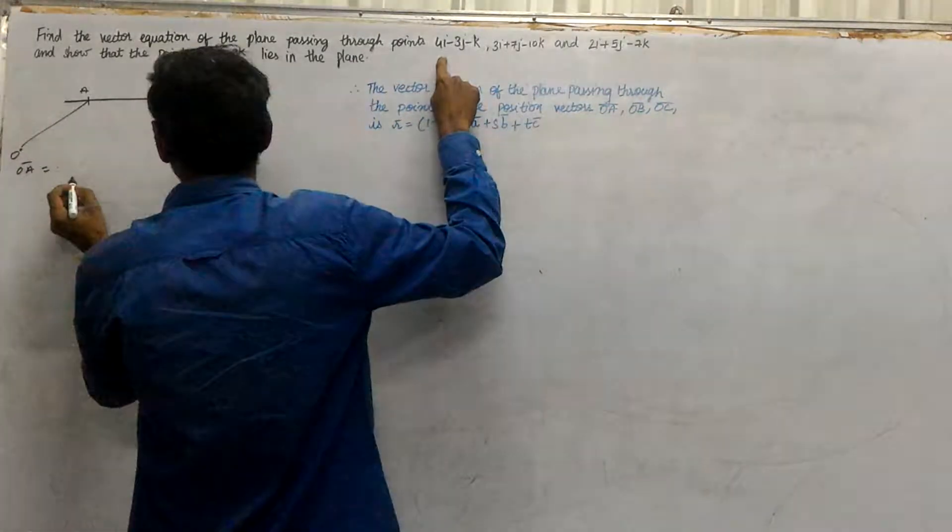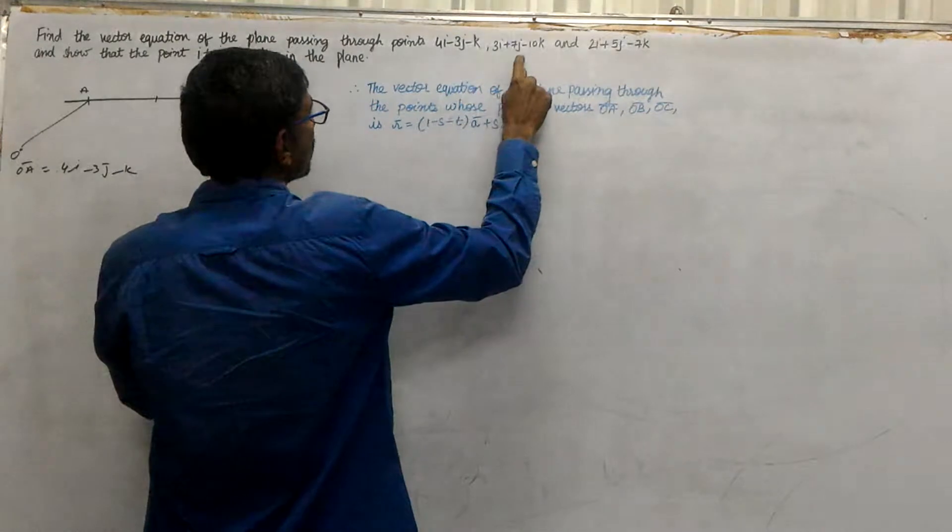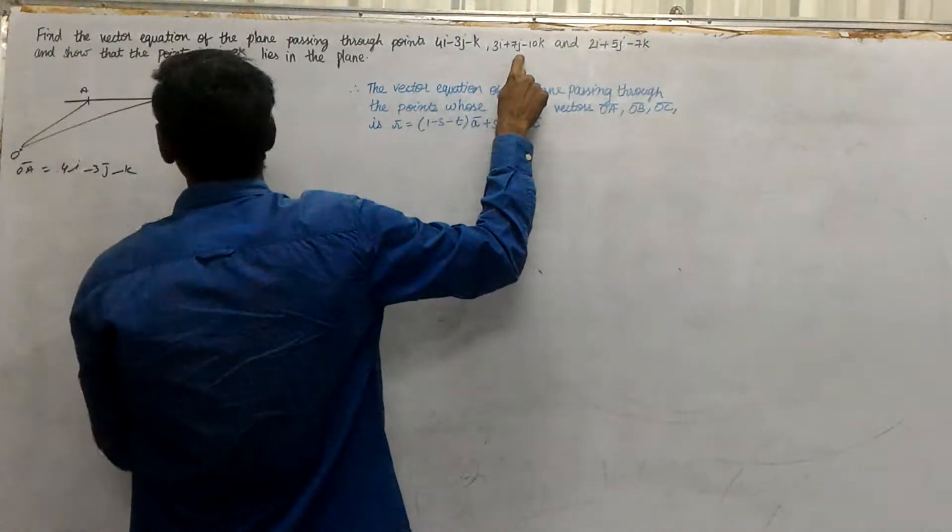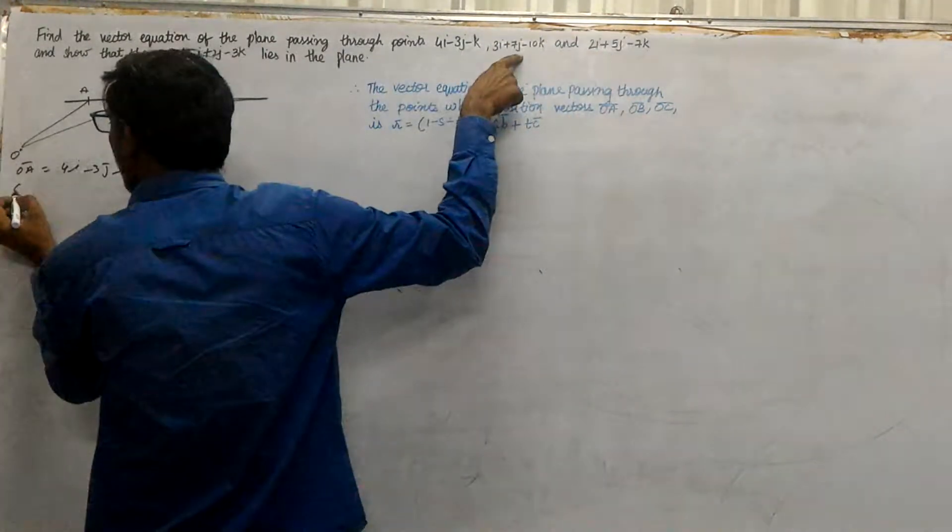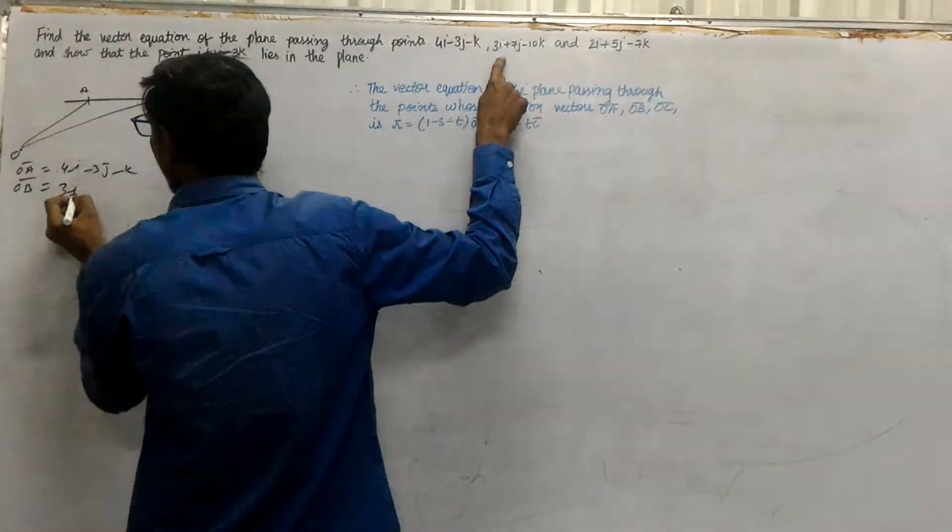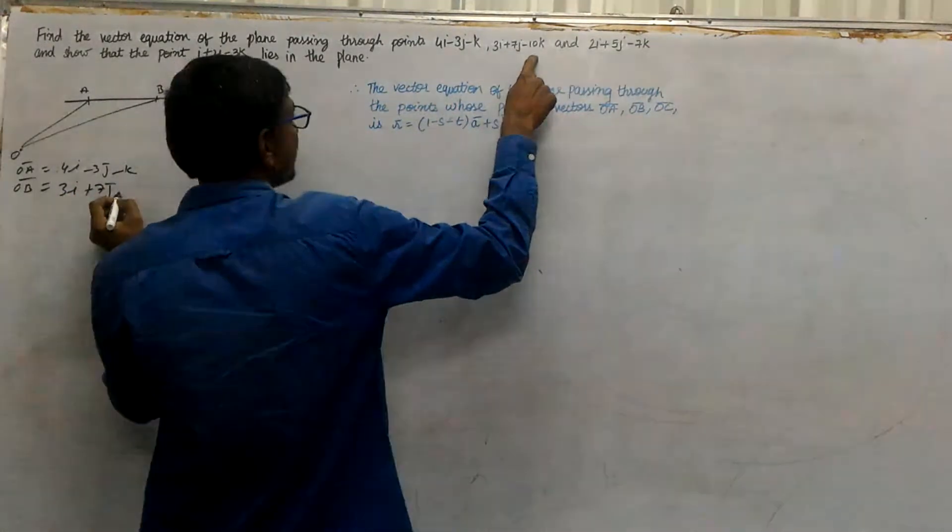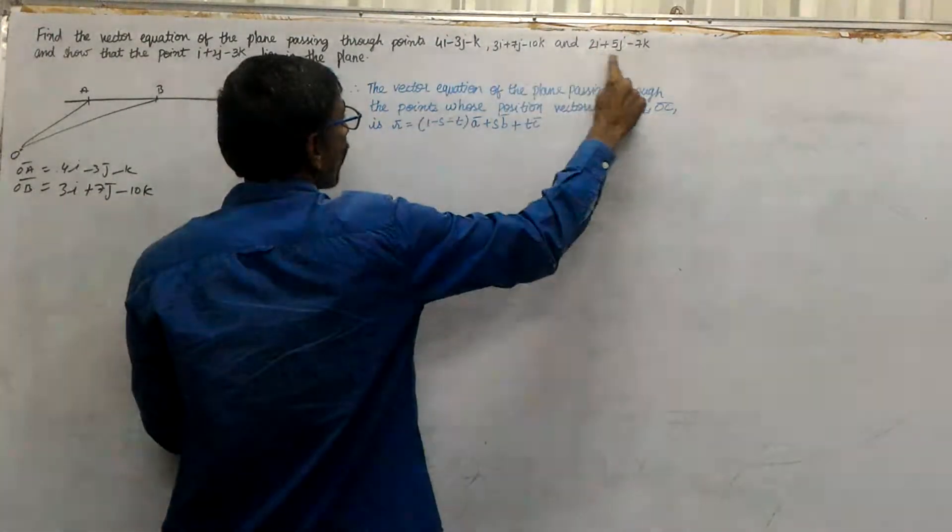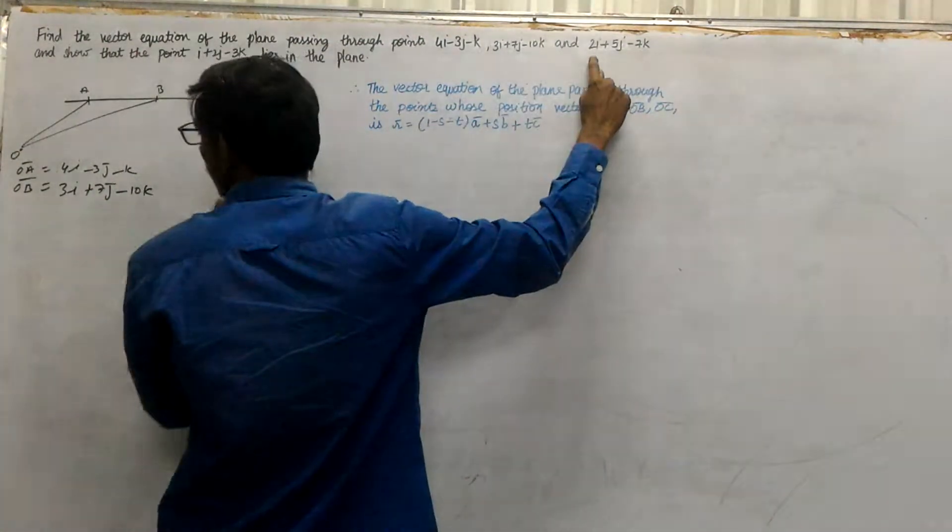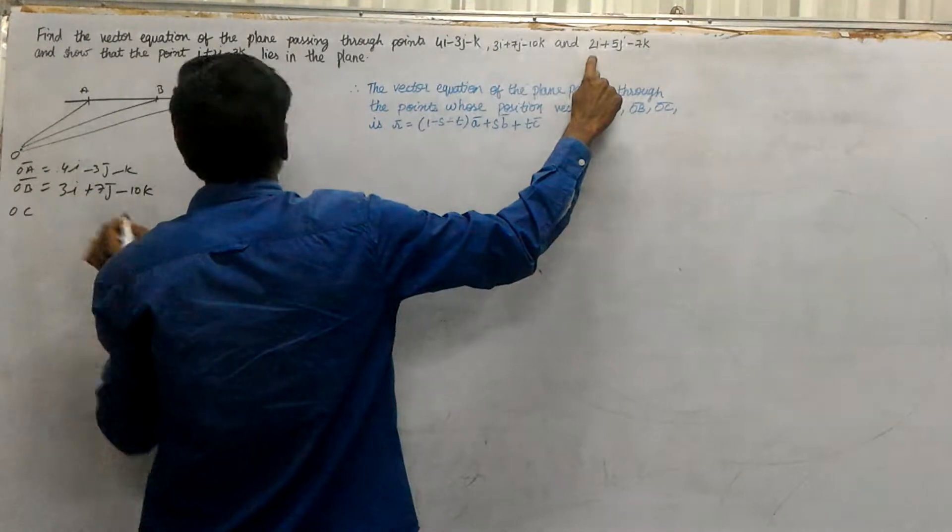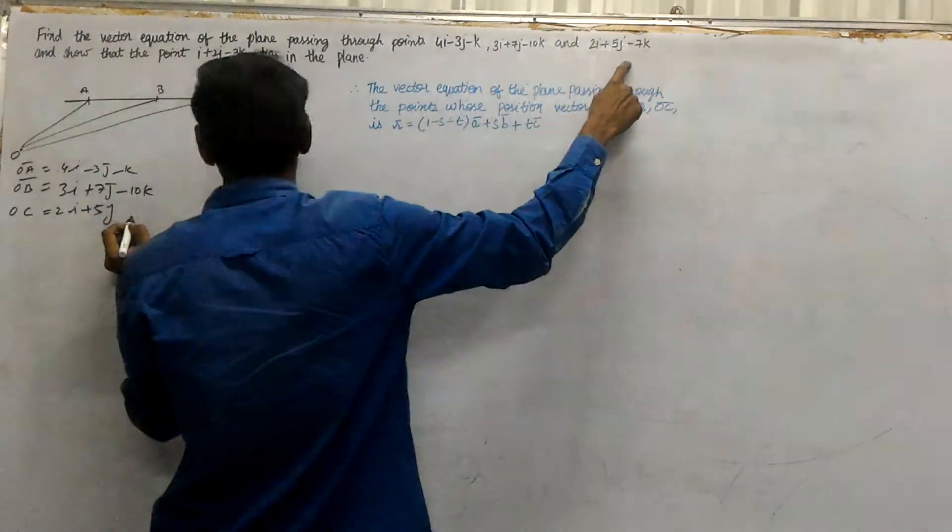The second point is B, whose position vector OB bar is equal to 3i-7j, sorry, plus 7j minus 10k. The third point is C, whose position vector OC is 2i+5j-7k.